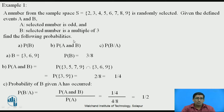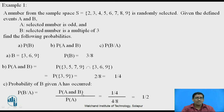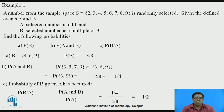Now the most important part — the conditional probability. We want to calculate conditional probability P(B|A). We know the formula: P(B|A) = P(A and B) divided by P(A). We calculated P(A and B) = 1/4. For P(A), the odd numbers in the sample space are 3, 5, 7, 9, so P(A) = 4/8. Therefore P(B|A) = (1/4) divided by (4/8) = 1/2. That is the conditional probability answer.